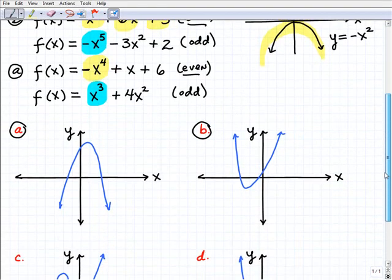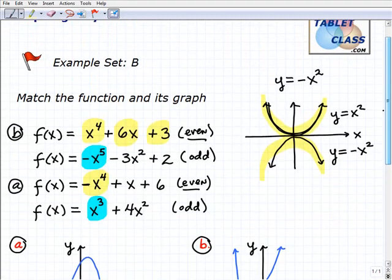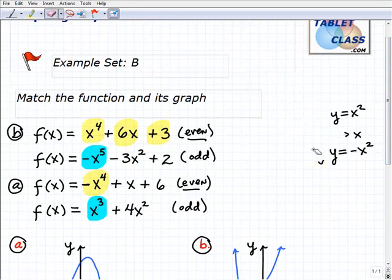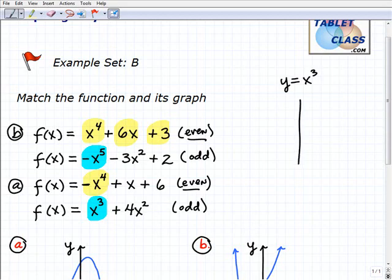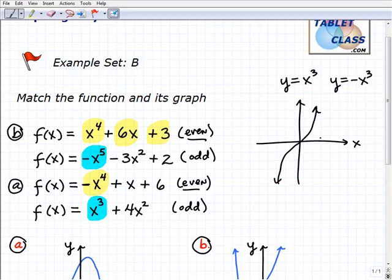Alright, so that means that graphs C and D are going to match up to our odd polynomials here. And now let's just do the same thing, but this time we'll use y equals x cubed as our basic odd polynomial situation. And what happens here is your basic odd polynomial is going to be something like this. Alright, some sort of curve, double curve shape, kind of does a little turn and it goes up. And if we have a y equals negative x cubed situation, once again it gets flipped across the x-axis. So it's going to be like so.